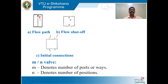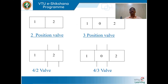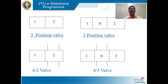To draw a symbol for a 2-position valve, draw 2 adjacent squares — each switching position is denoted by 1 square. So 2 adjacent squares means 2 switching positions: position 1 and position 2. To show 3 switching positions, draw 3 squares, with the center being the center path configuration.